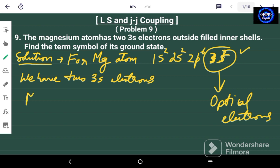It means the value of capital Ms which is equal to the sum of the spin magnetic quantum number must be equal to zero because we have ms equals 1 by 2 and ms equals minus 1 by 2. So that must be equal to 0.